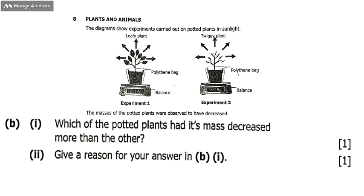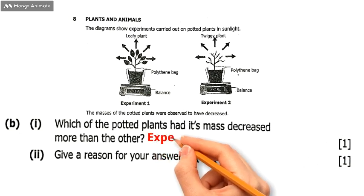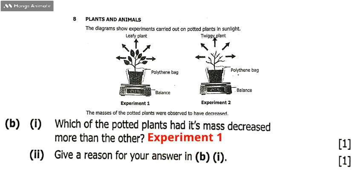We come to question 8b(i): which of the potted plants had its mass decreased more than the other? The correct answer is Experiment 1. Why Experiment 1? The plant in Experiment 1 has broader leaves.